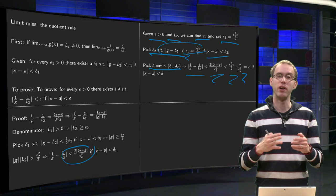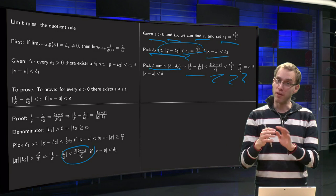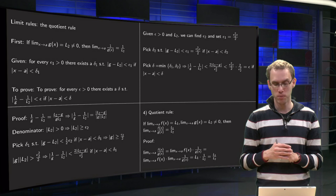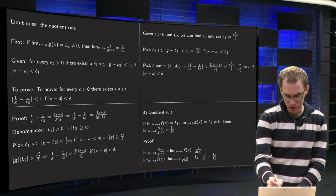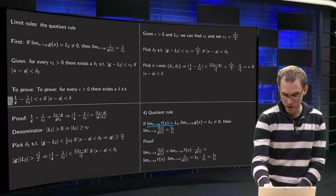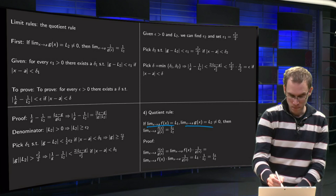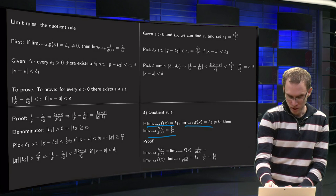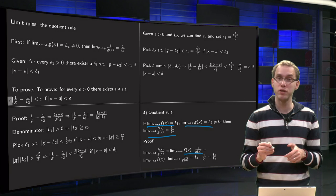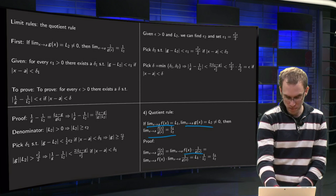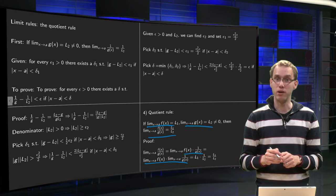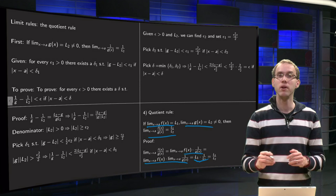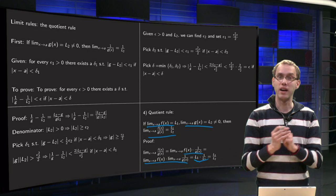I have now done the hard work. We know that if g goes to L, then 1/g goes to 1/L, provided L is not equal to zero. Now we can prove the quotient rule by combining this with the product rule. The quotient rule states: if the limit as x approaches a of f equals L₁, and the limit of g equals L₂ ≠ 0, then the limit of f/g equals L₁/L₂. The proof: f/g equals f times 1/g. By the product rule, separate this into two limits — the limit of f, which equals L₁, times the limit of 1/g, which equals 1/L₂. So that equals L₁/L₂, and there we have the quotient rule.